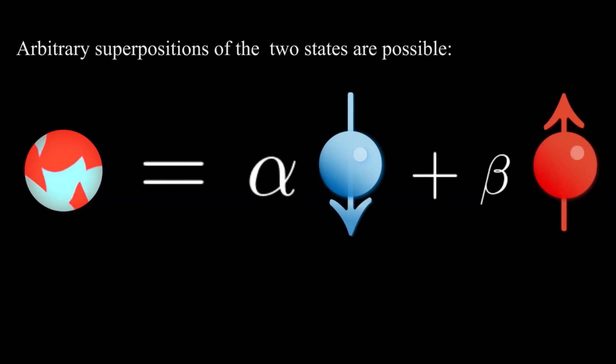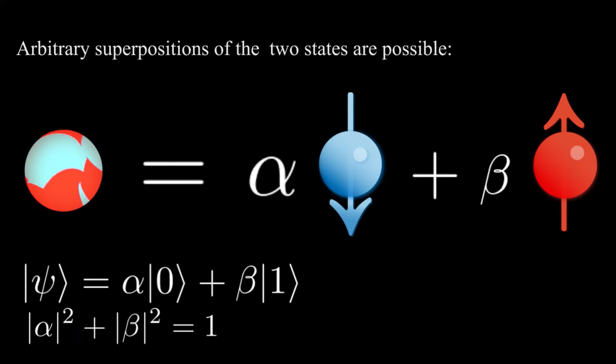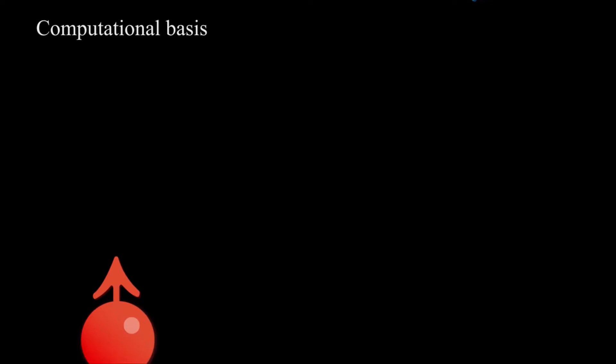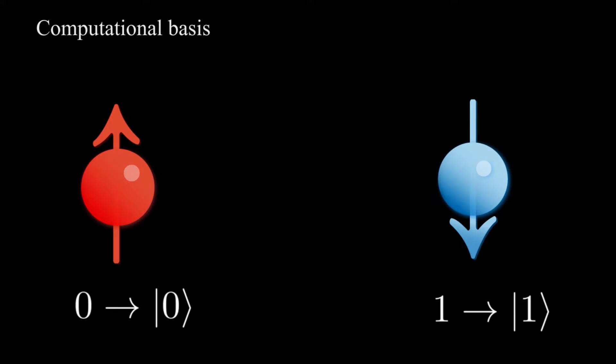However, the structure of quantum theory allows arbitrary superpositions of the above two states. These alpha and beta are probability amplitudes, and they do allow us to calculate probabilities. The states ket0 and ket1 are called computational basis, which is the standard basis employed in quantum computation and communication.